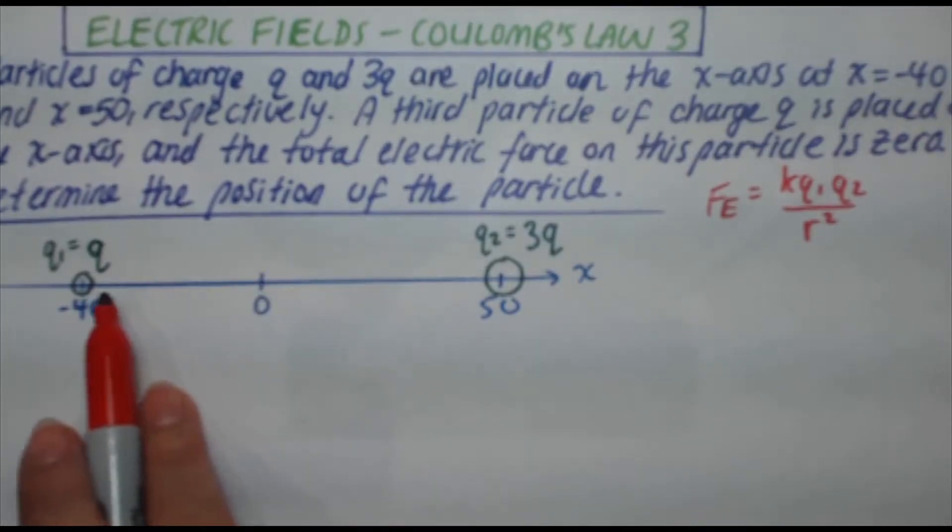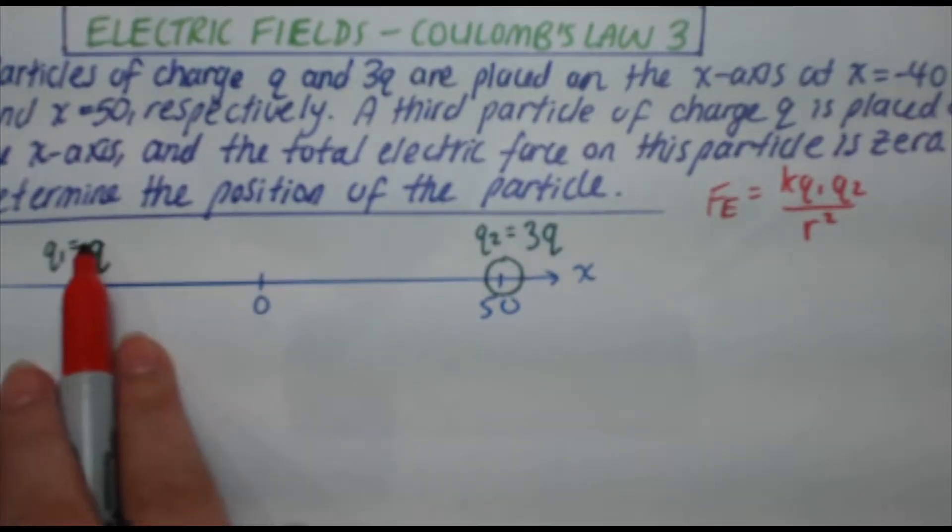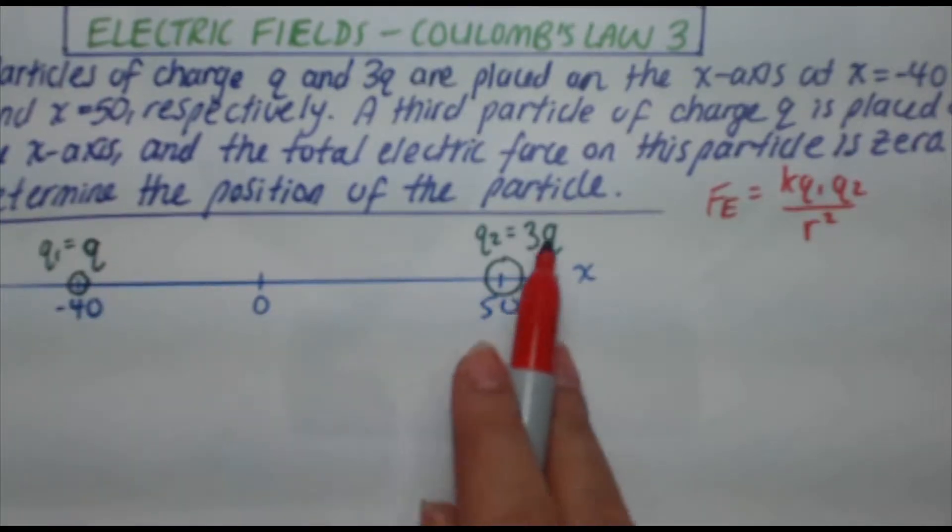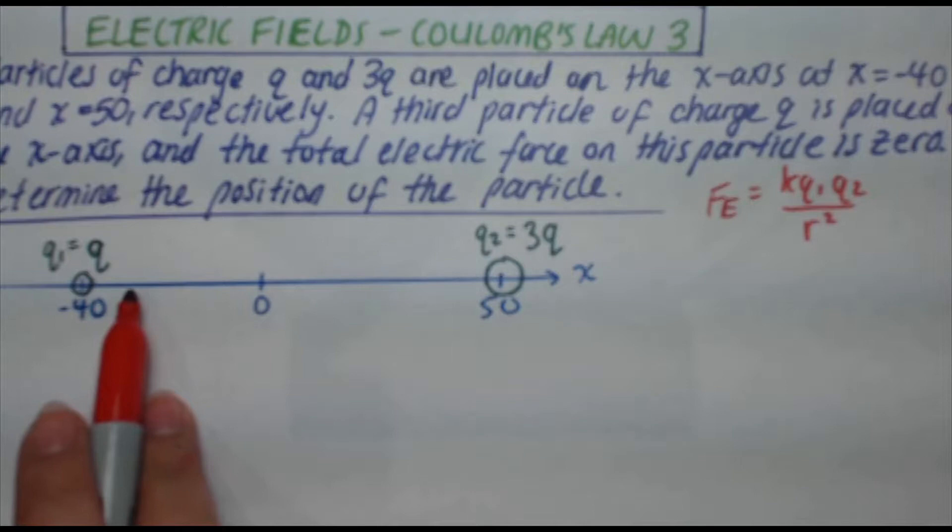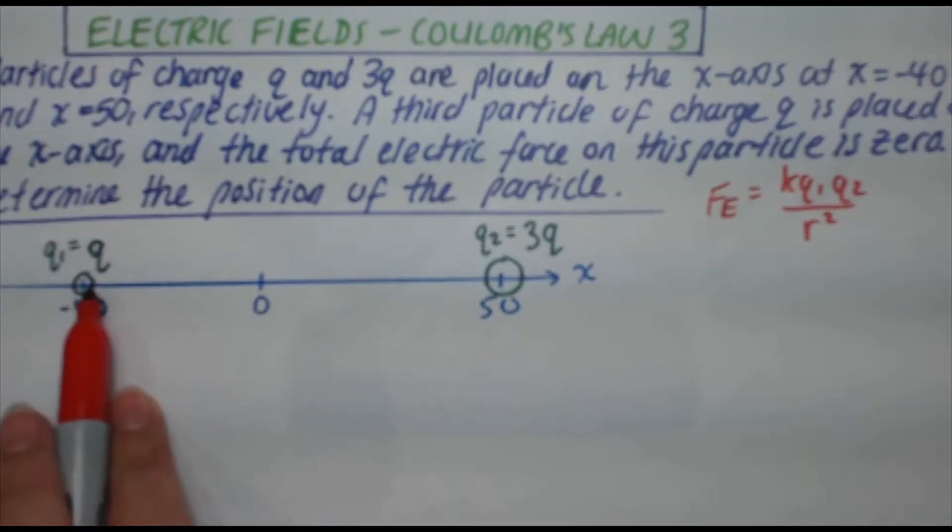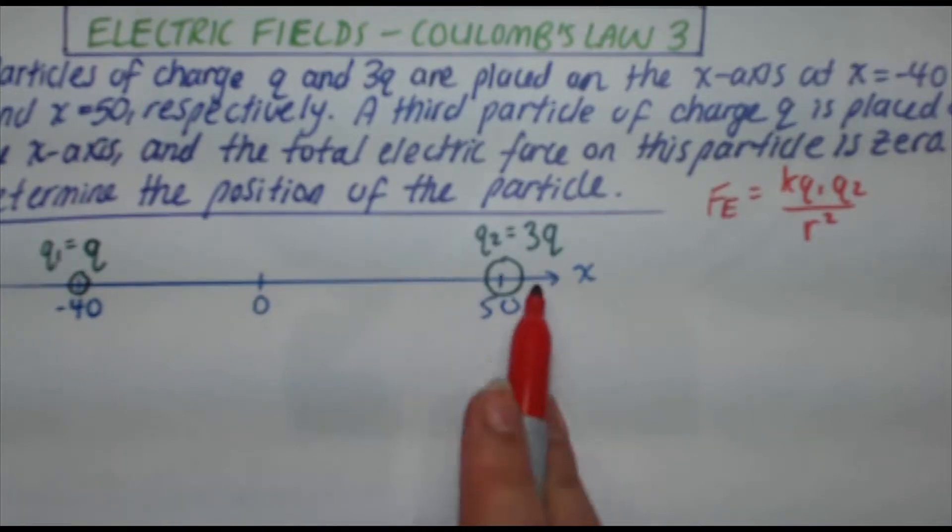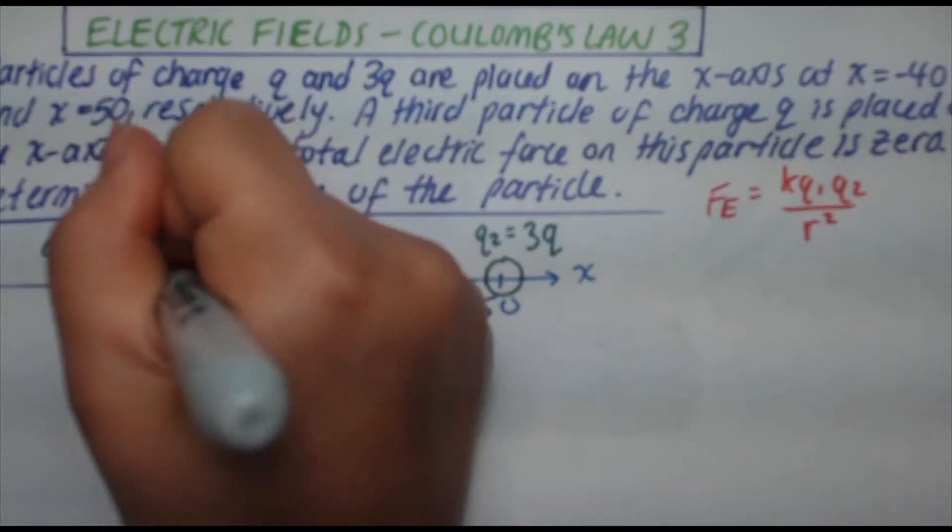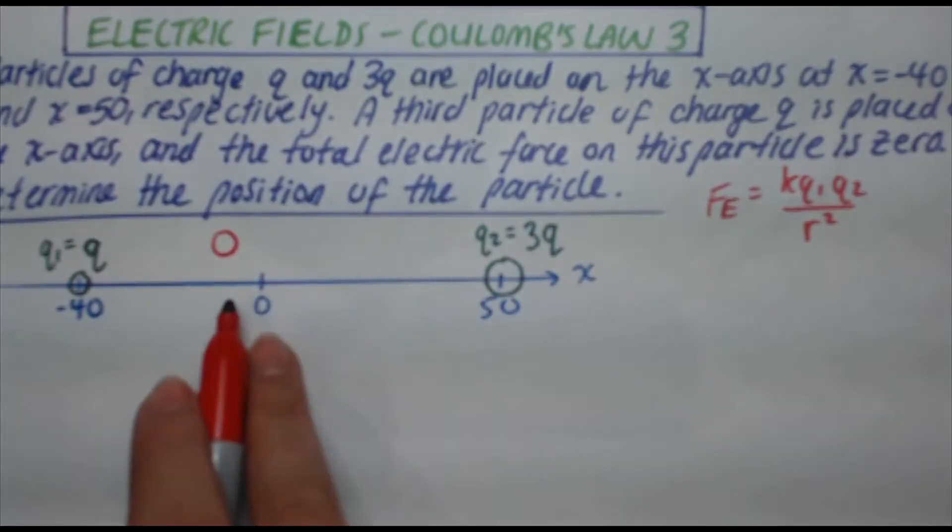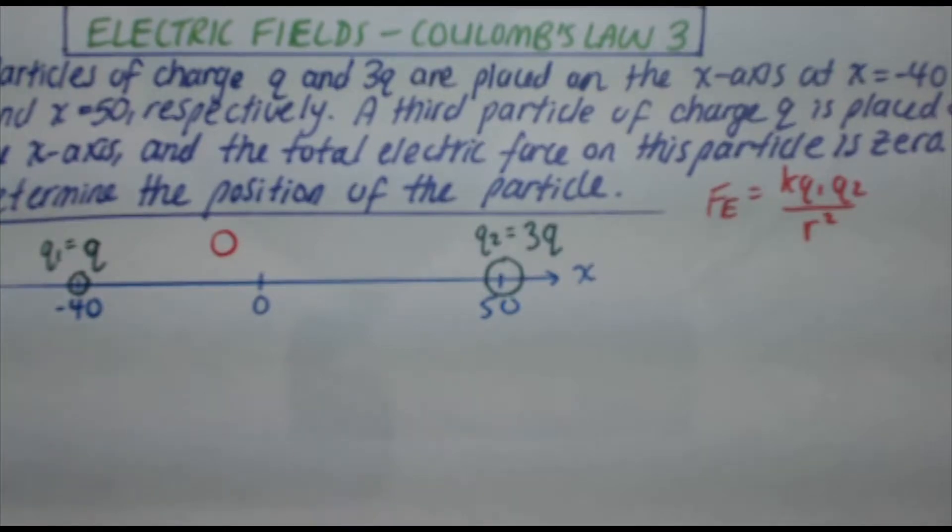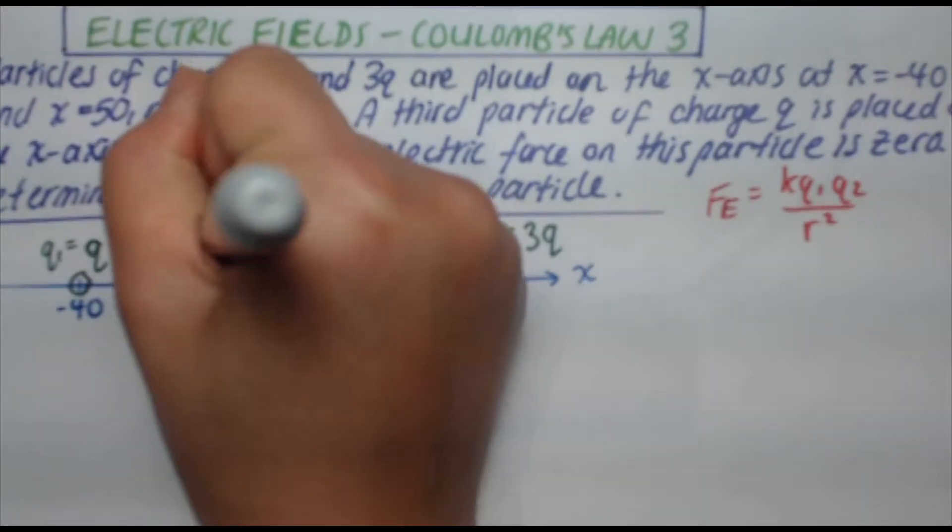The idea is this: you want to be closer to the smaller charge because q here is one-third the charge of q2. So you have to compensate by making the distance shorter so that the repulsive force from here almost, or in this case, equally balances out the repulsive force from this. So I know that my q3 is going to be somewhere maybe around here, something like this. It's going to be closer to q1 than q2.